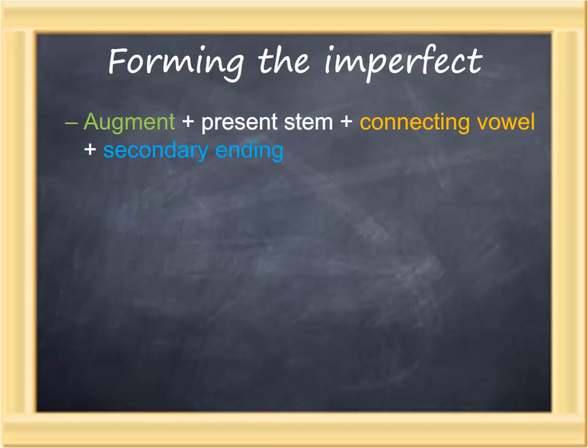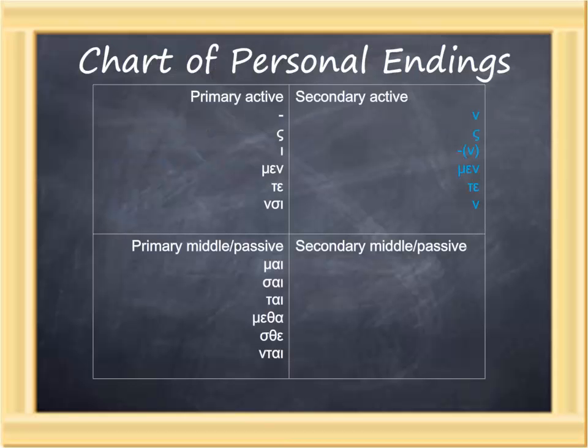The verb is the most important word in the Greek sentence. The secondary active endings are, in order: nu, sigma, nothing (to which a movable nu is often added), men, te, and nu. First singular, second singular, third singular, first plural, second plural, third plural. Notice that the first singular and third plural are identical in form, so it will be the context—the presence of a first-person pronoun or a nominative plural in the sentence—that will help us distinguish the forms.